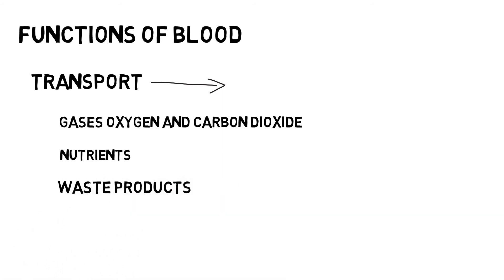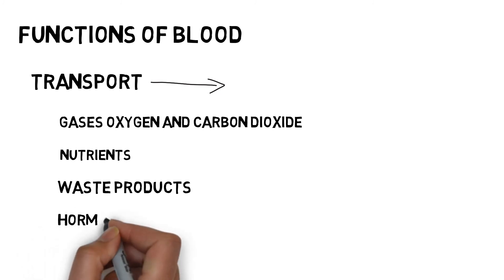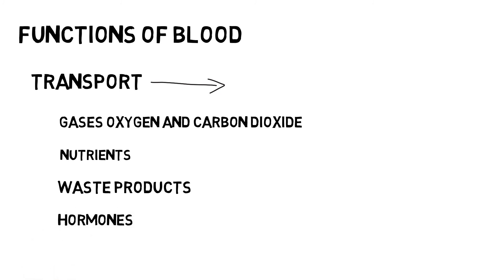Waste products formed in tissues during various metabolic activities are removed by blood and carried to excretory organs like kidneys, skin, and liver for excretion. Blood also transports hormones secreted by endocrine and exocrine glands to their target organs, and it transports enzymes. Blood is also responsible for regulation of body temperature, maintaining a balance between heat loss and heat gain.